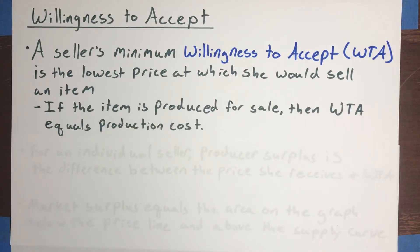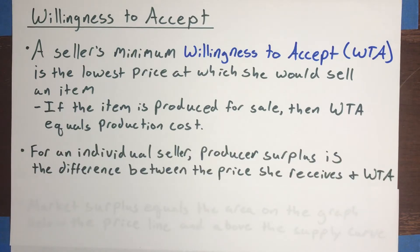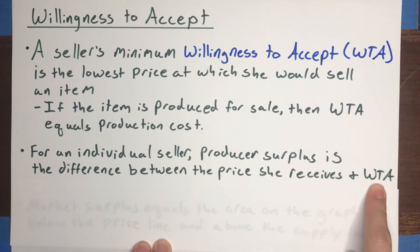Now, if the seller is producing the item for sale, then the willingness to accept is usually going to be equal to the production cost. If it takes $10 in resources and labor to produce an item, then usually the lowest price you could get the seller to accept would be that $10. Because if she sells for less, she makes negative profit and will go out of business. So in an industrialized economy where most goods are produced for sale, willingness to accept is typically equal to or very close to the cost of production. That tells you that for an individual seller, producer surplus is just the difference between the price she's able to sell the unit for and her minimum willingness to accept.